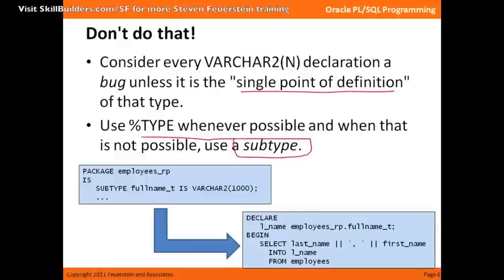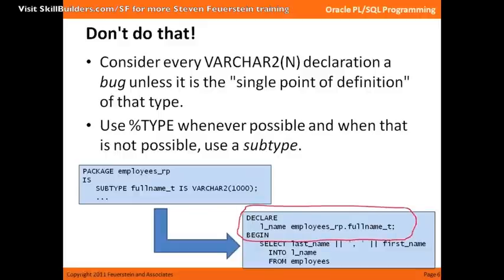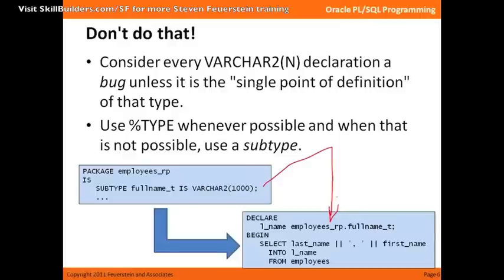SUBTYPE is one of my favorite features in PL/SQL. It's a very simple thing — it basically creates an alias for another data type. Here's a subtype in my employees rules package, all the rules having to do with managing employees. I declare my subtype, give it whatever name I want, and say 'IS some base data type.' Then in my code I reference that new subtype as the data type of my variable. Now clearly I've still hard-coded the VARCHAR2 declaration — it's now at a maximum of 1,000. But if I use this formulation for declaring any variable that needs to be populated with the full name of an employee, then if I ever need to change it, I change it in one place — just like changing the column definition of a table. The package has to be recompiled, and all the programs that depend on that package take on the new maximum limit.